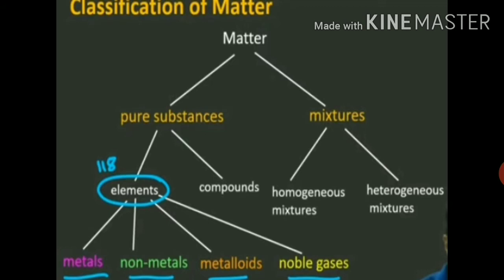Let's come to mixtures. A mixture is the physical combination of two or more substances. Mixture is divided into homogeneous mixture and heterogeneous mixture. Homogeneous mixture has the same uniform appearance and composition — for example, water and sugar, water and salt. Heterogeneous mixture consists of visibly different substances — for example, sandy water, soil sample, oil and water.